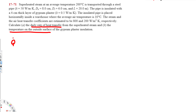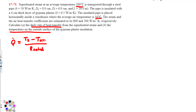To find Q-dot, the rate of heat transfer, we use the equation: Q-dot equals T_steam minus T_air over R_total. Heat always flows from hot to cold, so the steam at 200°C is the high temperature and air at 10°C is the low temperature. We know T_steam and T_air, but we need to calculate R_total.